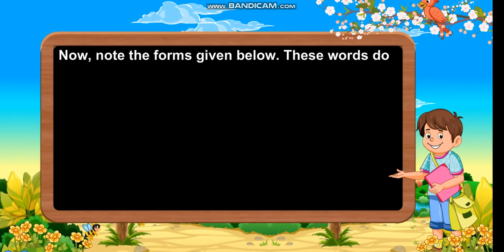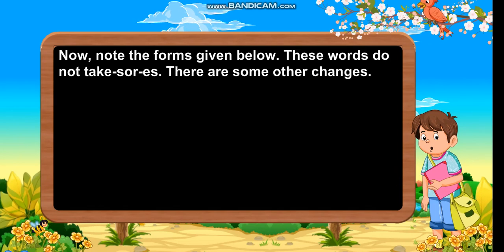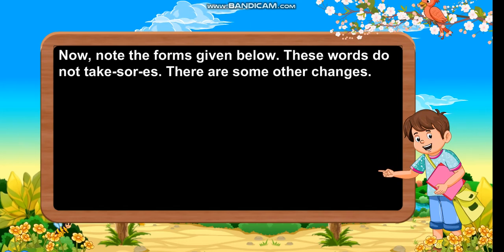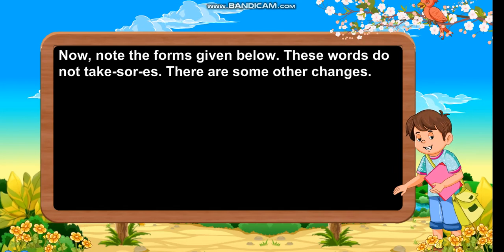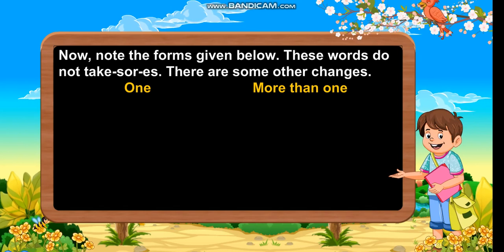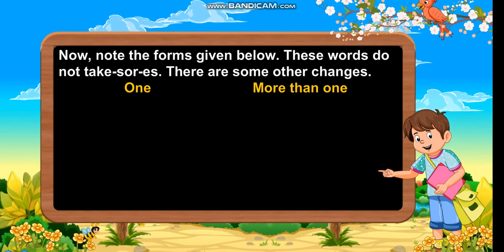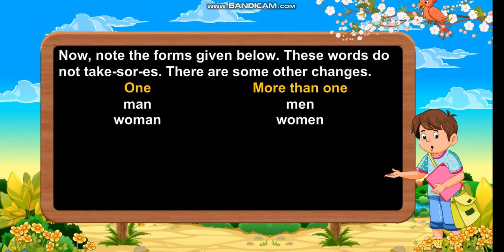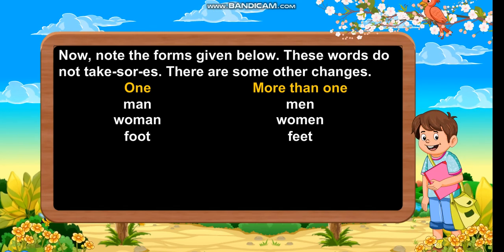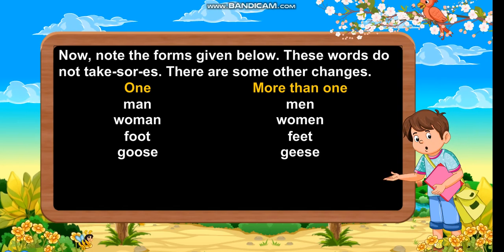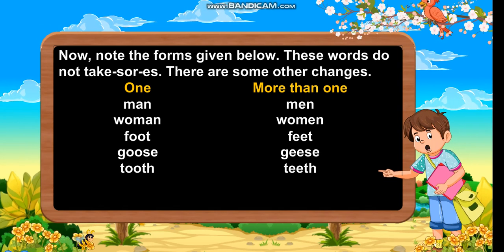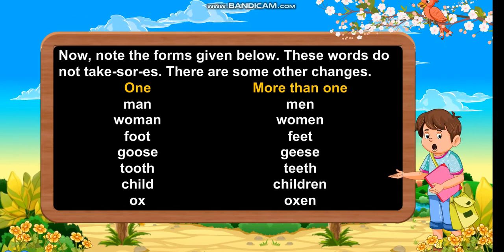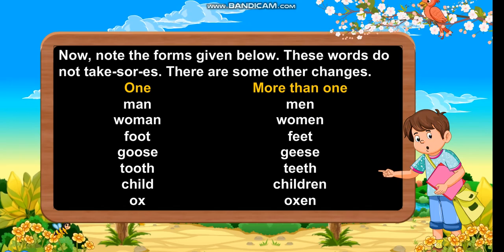Now note the forms given below. These words do not take S or ES — there are some other changes. One — More than one: Man — Men, Woman — Women, Foot — Feet, Goose — Geese, Tooth — Teeth, Child — Children, Ox — Oxen.